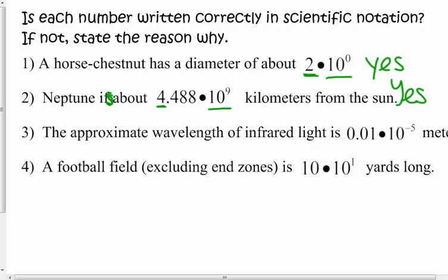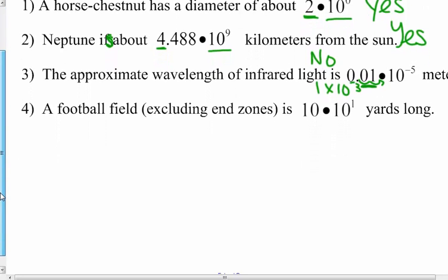The approximate wavelength of infrared light is one one-hundredth times ten to the negative fifth meter. One one-hundredth is not a number between one and ten, so that is not written in scientific notation. But I can convert it: one times ten to the negative third would be the equivalent written in scientific notation. So the answer is no, because one one-hundredth is not a coefficient between one and ten.